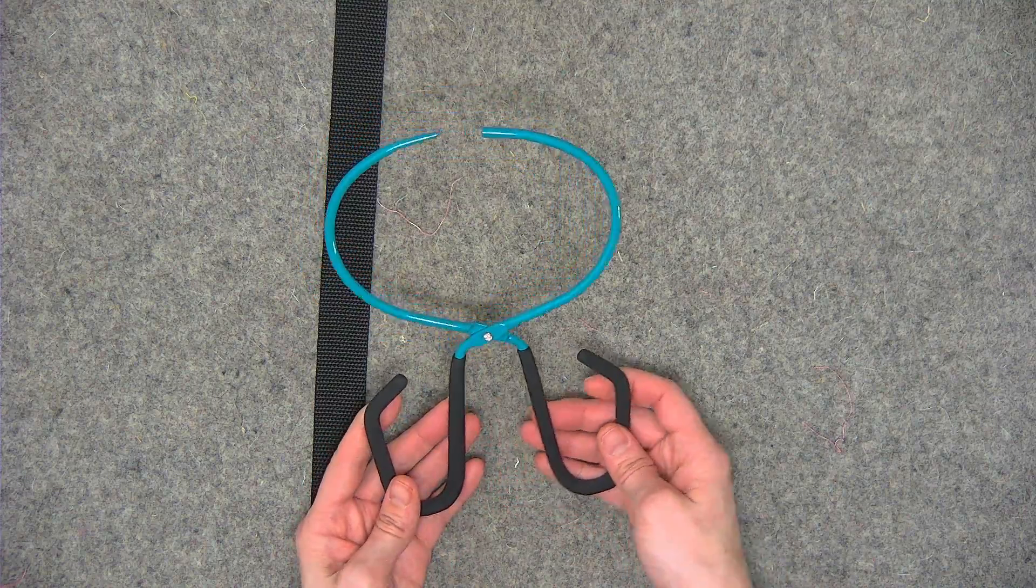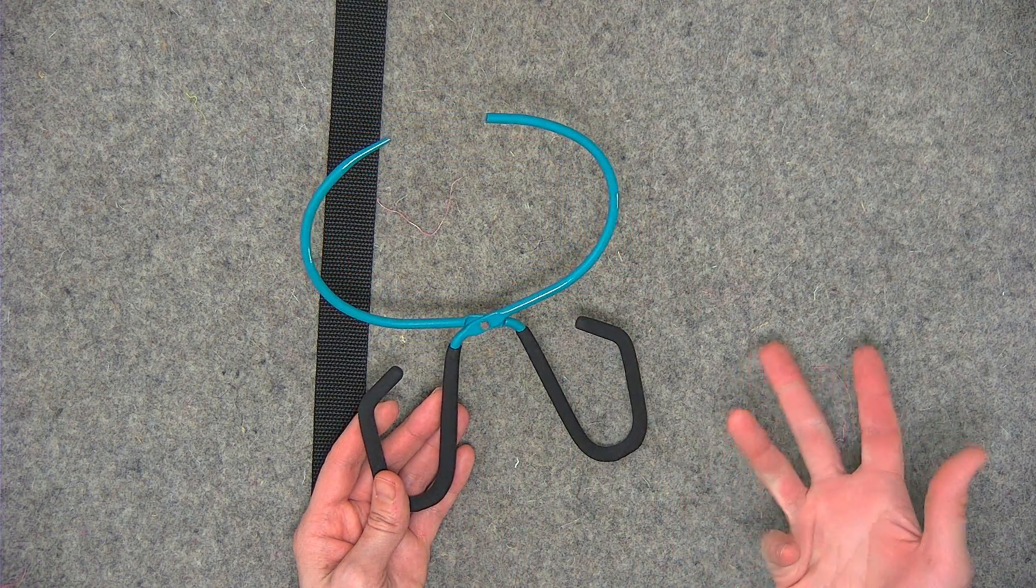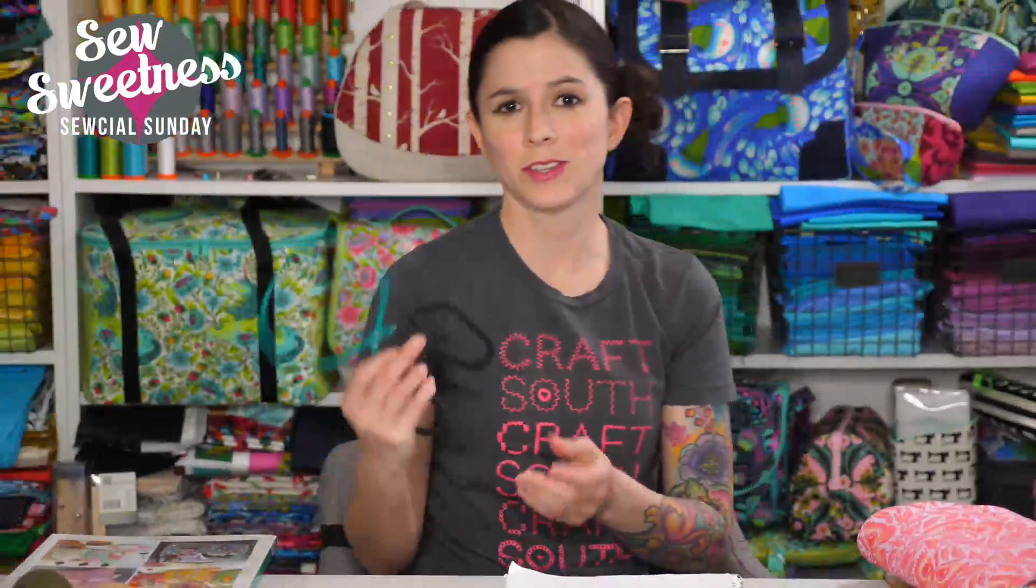So again this is called the Easy Point and Turner and if you're interested in finding out more information the link for this tool is in the description. So that was a really cool tool right? I liked that it had so many different uses for it. Of course if you're making stuffed animals or other different types of projects spaghetti straps on a garment. So it's not just for bag making. I thought it was really cool and great job Sue to coming up with something new that I haven't seen before and something really useful.